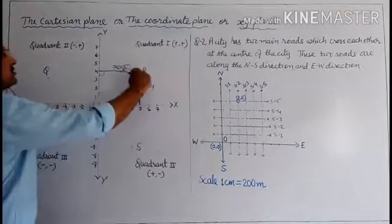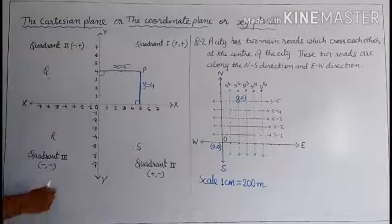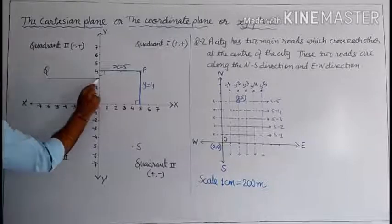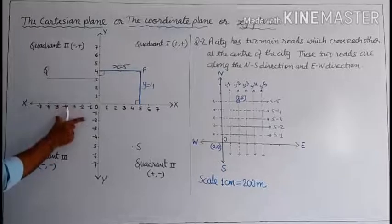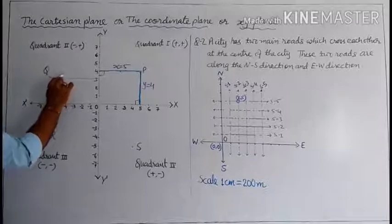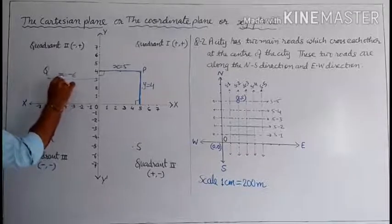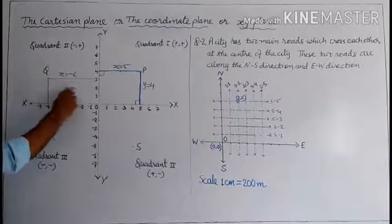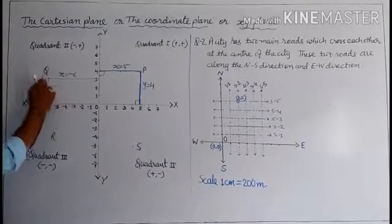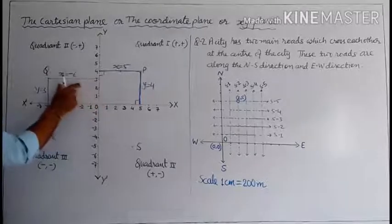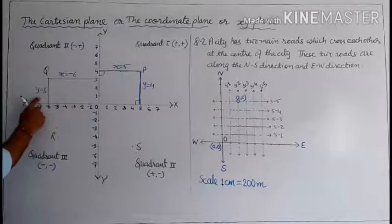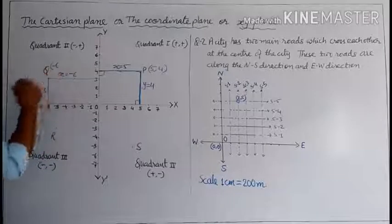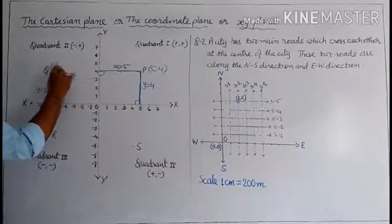For point Q in the second quadrant, dropping a perpendicular to the Y axis gives a distance of 6 units, but as it is in the west direction, X equals negative 6. Dropping a perpendicular to the X axis gives Y equals positive 3 as it is towards north. So the coordinates of point P are (5, 4) and the coordinates of point Q are (−6, 3).